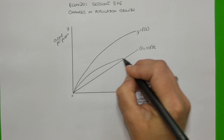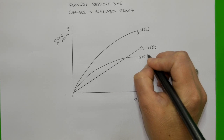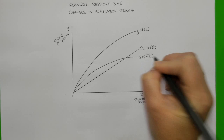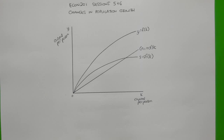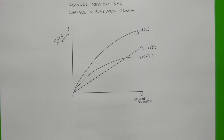I am then drawing in the savings function, which shows the amount of savings per person generated at each level of output per person. The savings function depends on the savings rate — it is assumed we save a constant portion of our output per person. But because output per person increases at a decreasing rate, savings per person also increases at a decreasing rate. The savings function lies below the production function because we do not save all of the output or income per person generated; some of it is consumed.